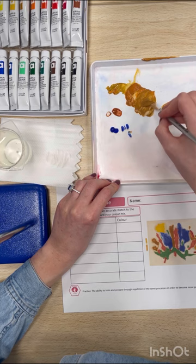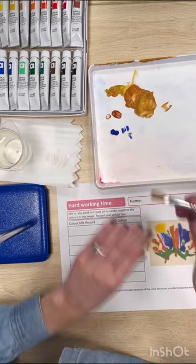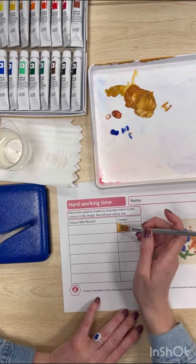You can see I even dabbed off the excess blue on the palette. Now I'm scraping off the excess onto the edge of the palette again. I have a color match so I'm going to apply it neatly into the box.